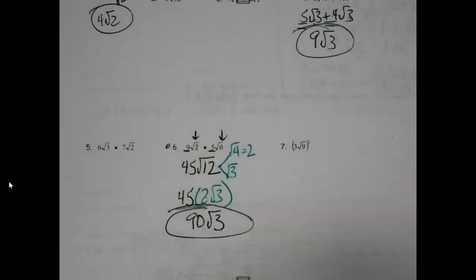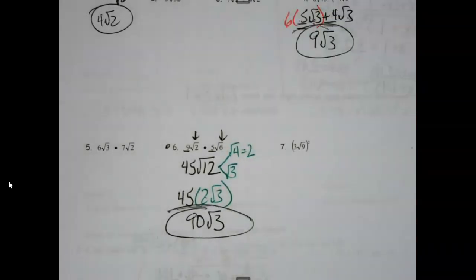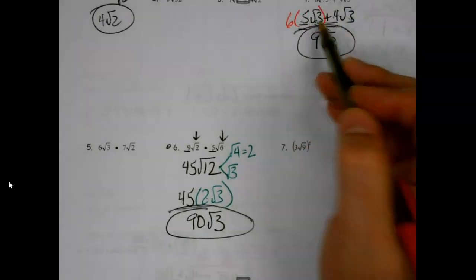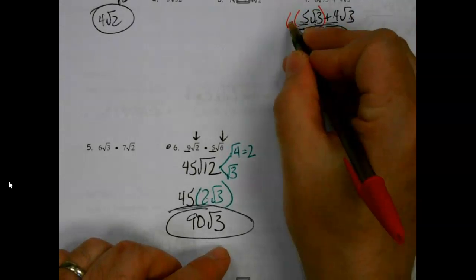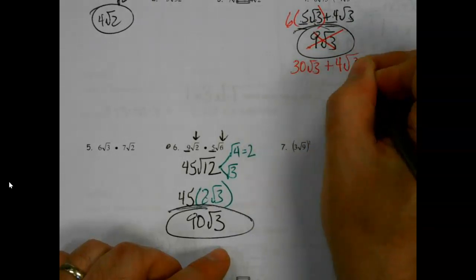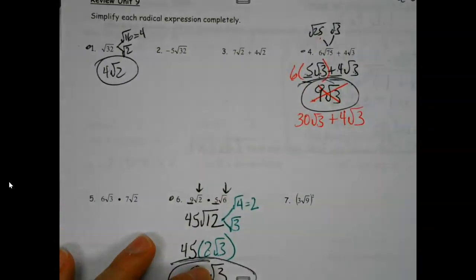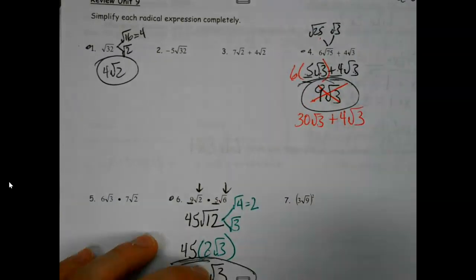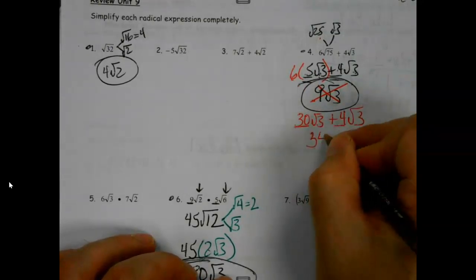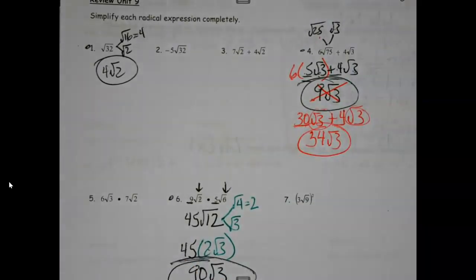Oh! Good catch - that shouldn't be a 6, but you're right - there should be a 6 there because there's a coefficient in the original problem. This is my 5, and square... oh dear. So 6 times 5 is 30. The same idea but the answer is a whole lot bigger than what I had. Thank you, good catch.